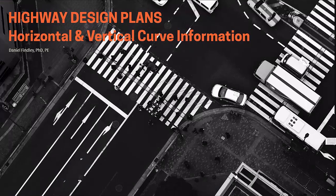That summarizes some of the critical components within a highway design plan for horizontal and vertical curve information. As you can see, especially the horizontal information can be very noisy and busy. It's important to recognize the key characteristics needed to understand what the horizontal design is telling you and what's going on.